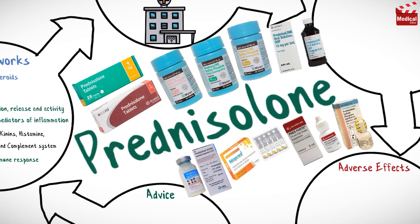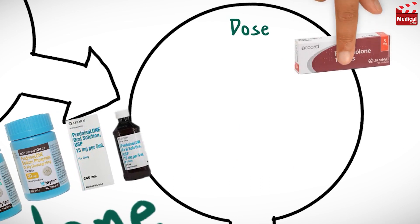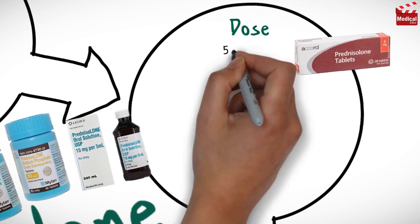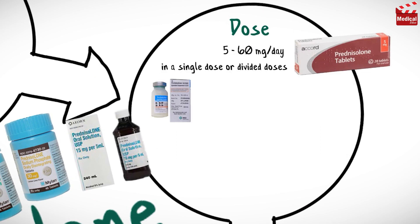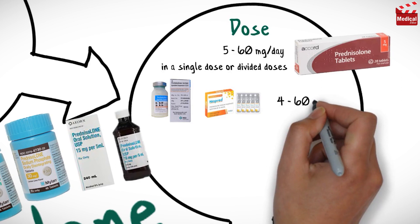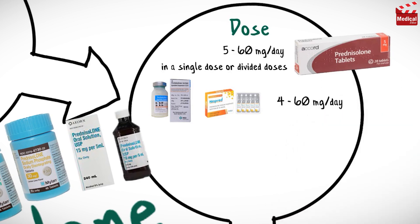Dosages of corticosteroids are variable and should be individualized according to the disease being treated and the response of the patient. The usual dose of oral prednisolone for adults is 5 to 60 mg per day in a single dose or divided doses. The usual dose of intramuscular and intravenous prednisolone is 4 to 60 mg per day.